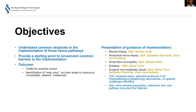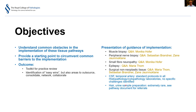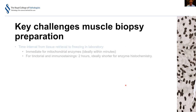We will also identify areas to outsource, consolidate, network, and collaborate. The neuropathology tissue pathways cover multiple aspects of specialist neuropathology reporting. Today we will cover muscle biopsy, peripheral nerve biopsy, small fiber neuropathy skin biopsies, epilepsy, and surgical non-neoplastic tissue. Further topics like CSF and temporal artery have no specific challenges identified, so we will not cover them. Hair and urine sample preparation is extremely rare — please refer to the pathway document.